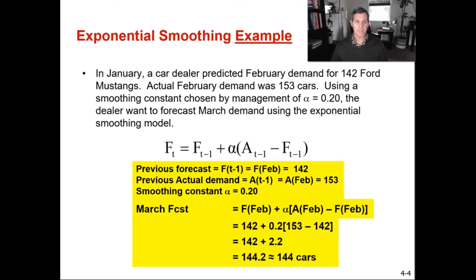So 153 minus the 142, which was our predicted demand. We will multiply that number by our 0.2 smoothing constant. And so 0.2 multiplied by 153 minus 142 gives us 2.2. And we add that to 142, which was our predicted February demand. So going forward for March, we're going to forecast 144 cars. So we're going to add a little bit of demand on from our February to get to our March with a relatively low smoothing constant of 0.2.